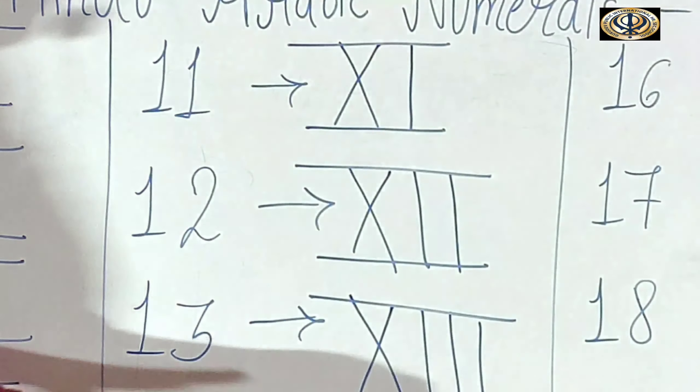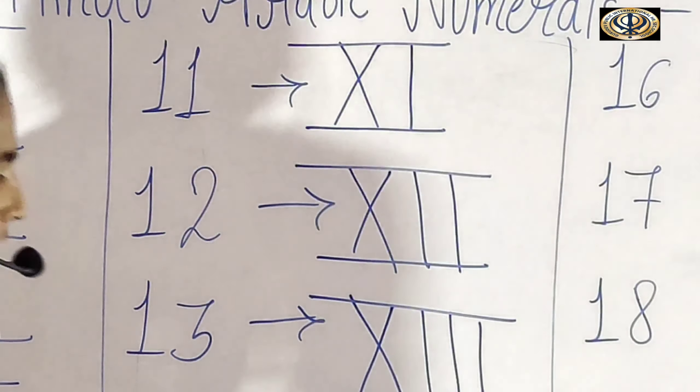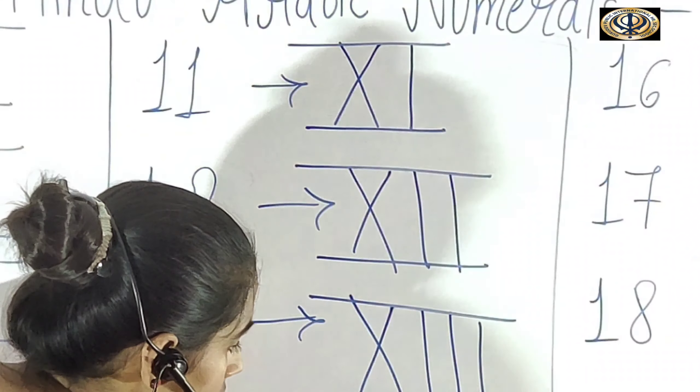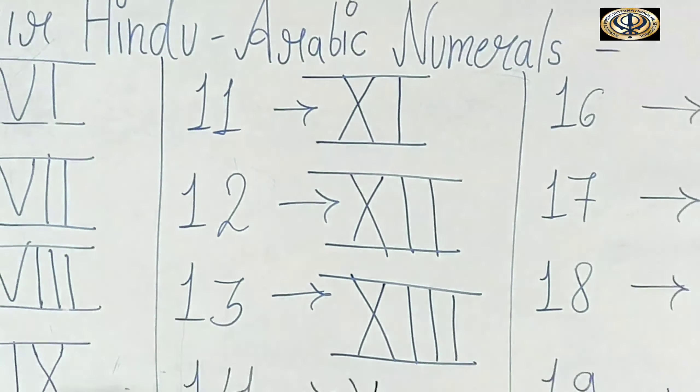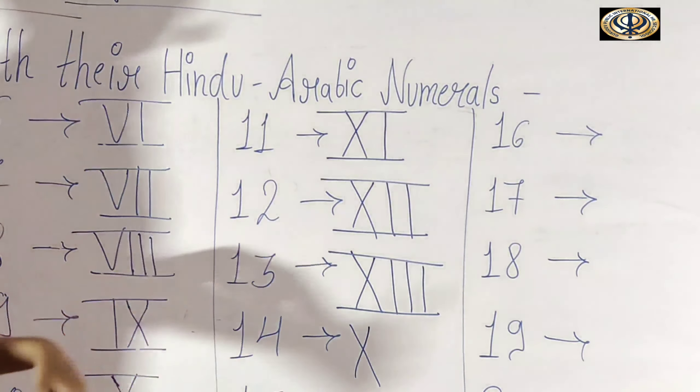This is 13 Roman number — XIII. 14: X and then IV — Roman number for 14 is XIV. So this is 14.